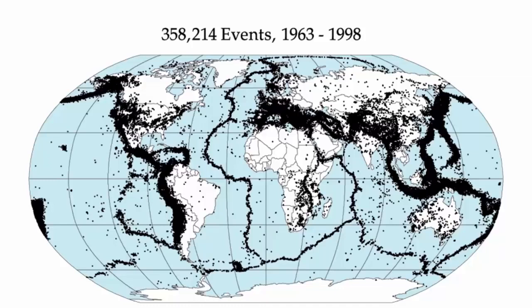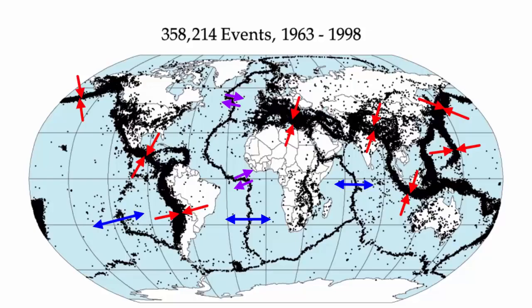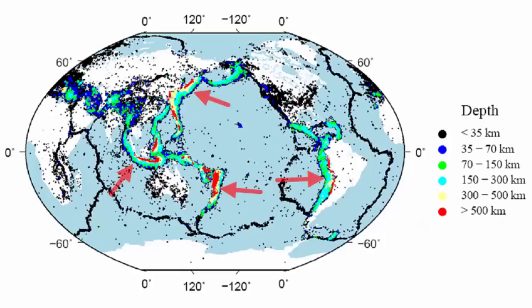What we can also see in these images is that earthquakes at divergent plate boundaries where oceans are opening up, or along transformed plate boundaries where plates slide past each other, are a bit different than those happening where plates converge. Convergent plate boundaries have much wider zones of earthquake activity. And when we color code earthquakes based on depth, we can see why.